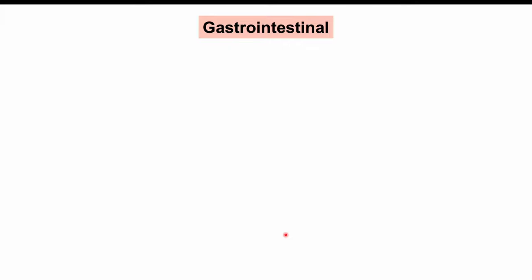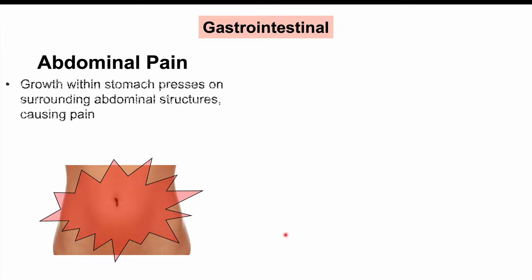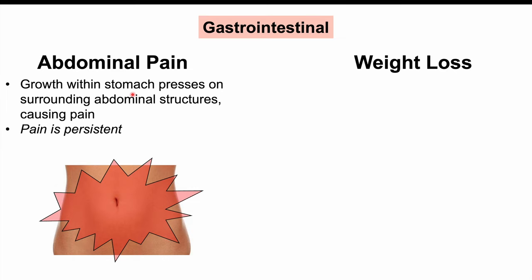Starting with gastrointestinal signs and symptoms, the first is abdominal pain. Abdominal pain is due to growth of the cancer within the stomach, which presses on surrounding abdominal structures and the stomach itself, causing pain. The cancer infiltrates the stomach tissue and presses on surrounding structures in the abdomen, and it is often a persistent pain.